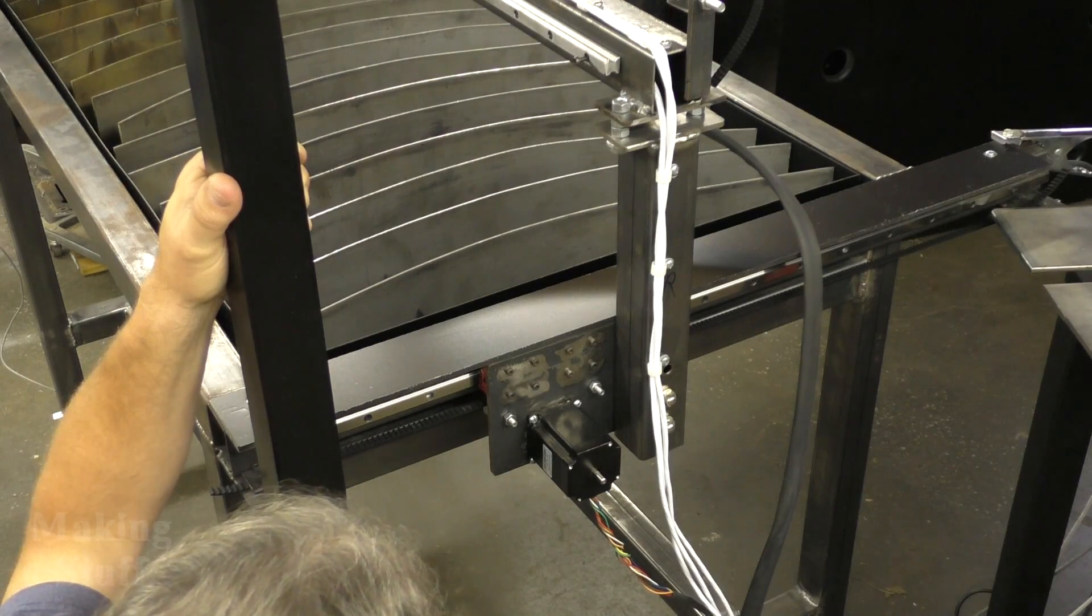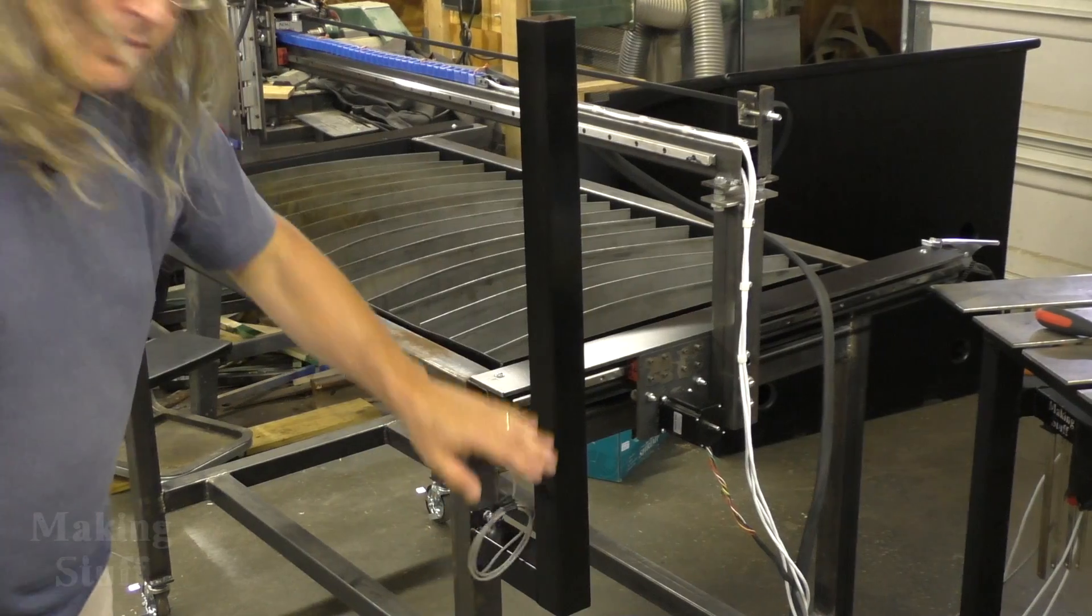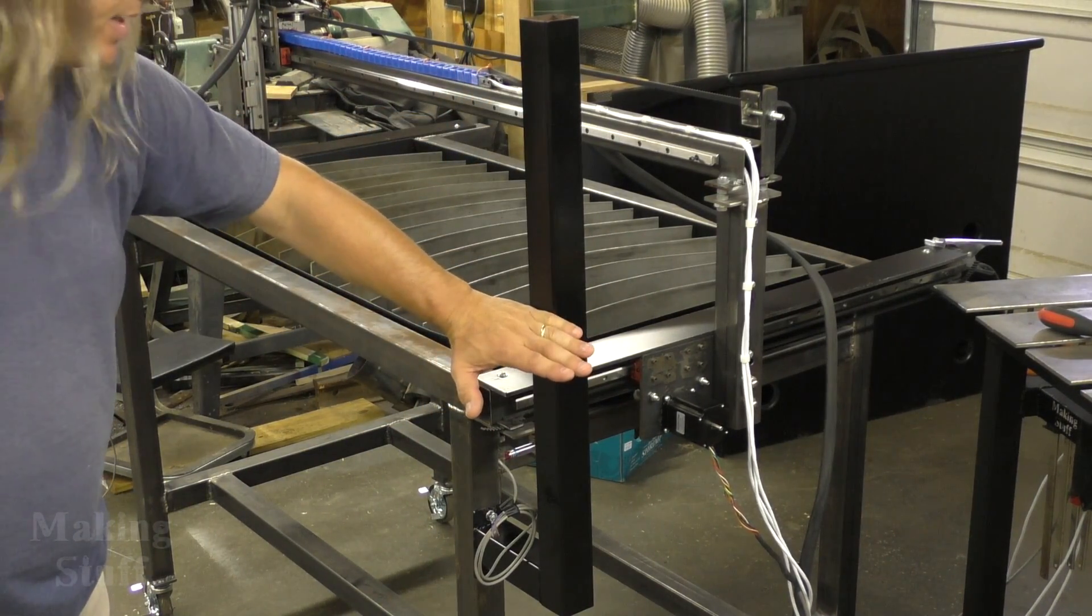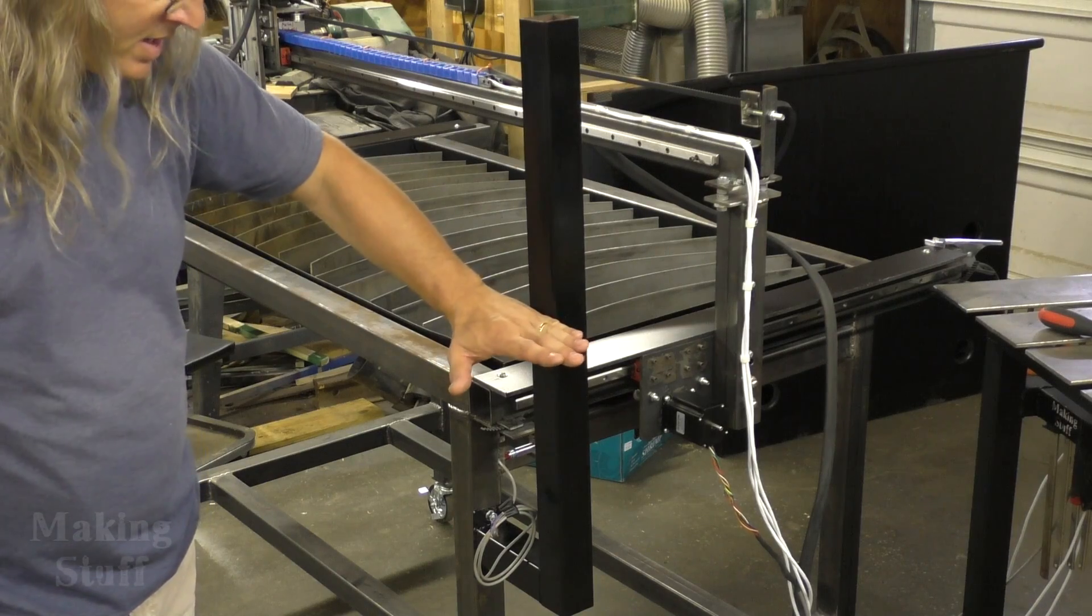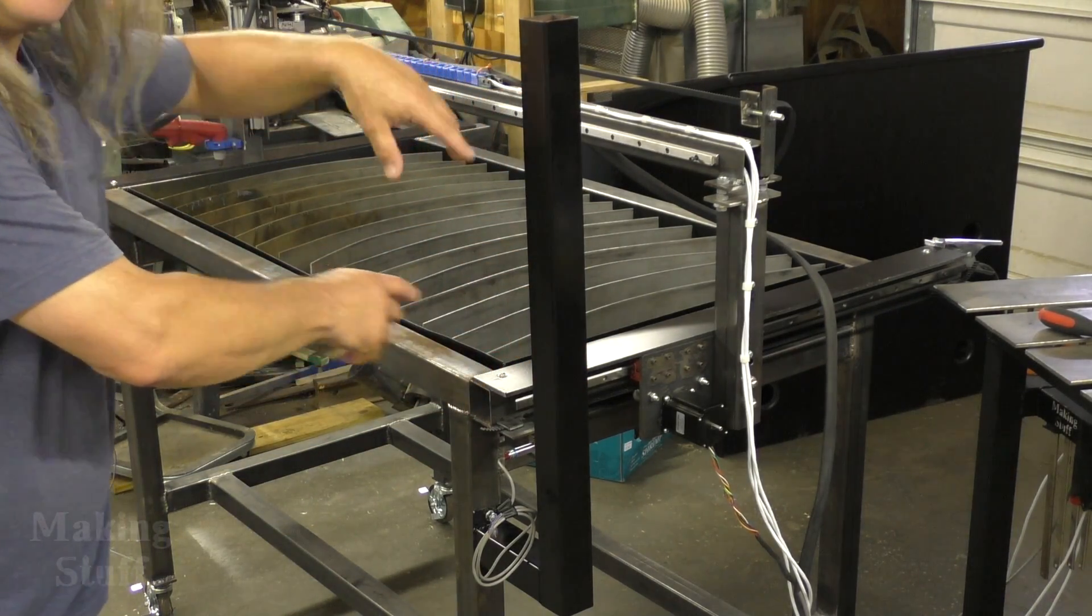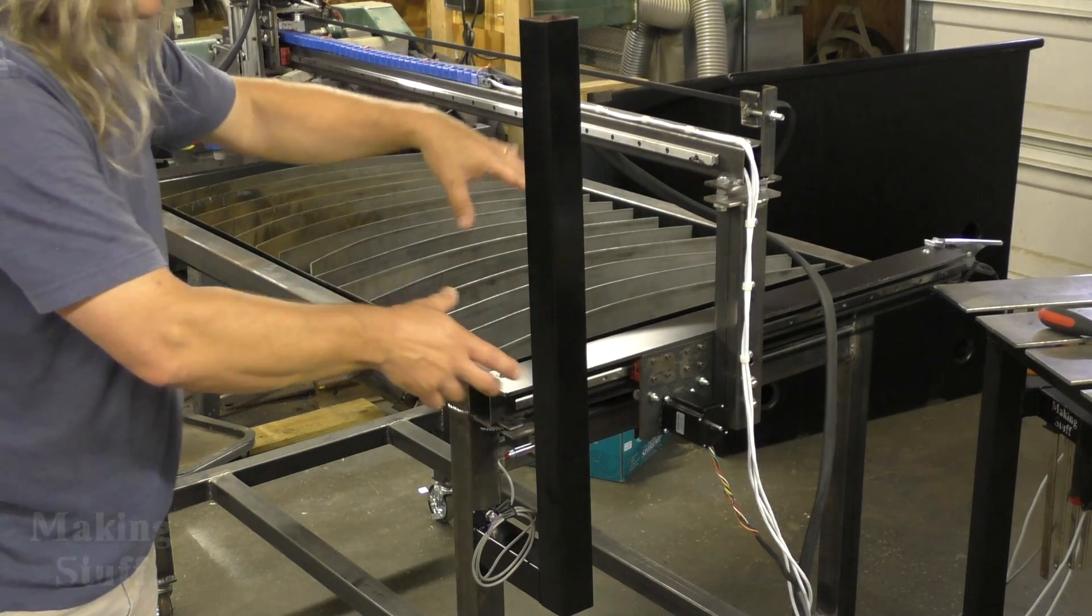I've also put this mount right here. I'm going to mount the monitor here and then put a little tray with the computer keyboard and mouse right below it on an articulating arm. That way I can move the keyboard and monitor around to whatever orientation I need when I'm using the machine.